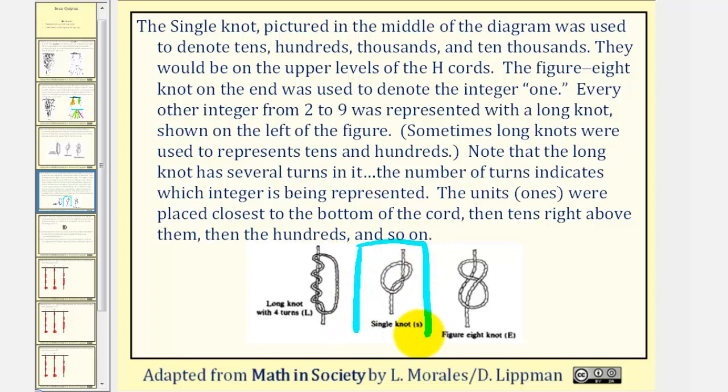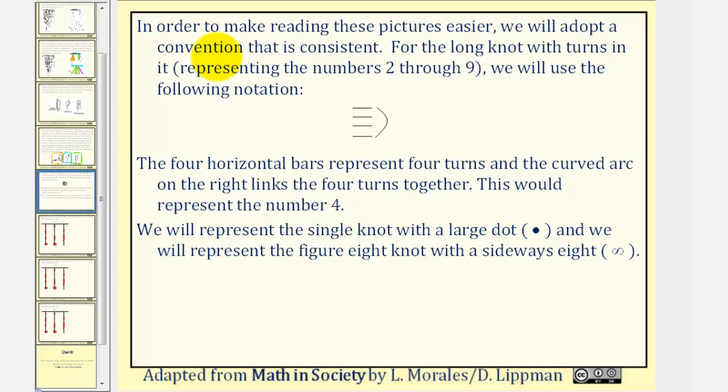The single knot, pictured here in the middle, was used to denote tens, hundreds, thousands, and ten thousands. They would be on the upper level of the H-cords. The figure-eight knot on the end was used to denote the integer one. Every other integer from two to nine was represented with a long knot, seen here on the left. Sometimes long knots were used to represent tens and hundreds. Note that the long knot has several turns in it. The number of turns indicates which integer is being represented. The units were placed closest to the bottom of the cord, then tens right above them, then the hundreds, and so on.